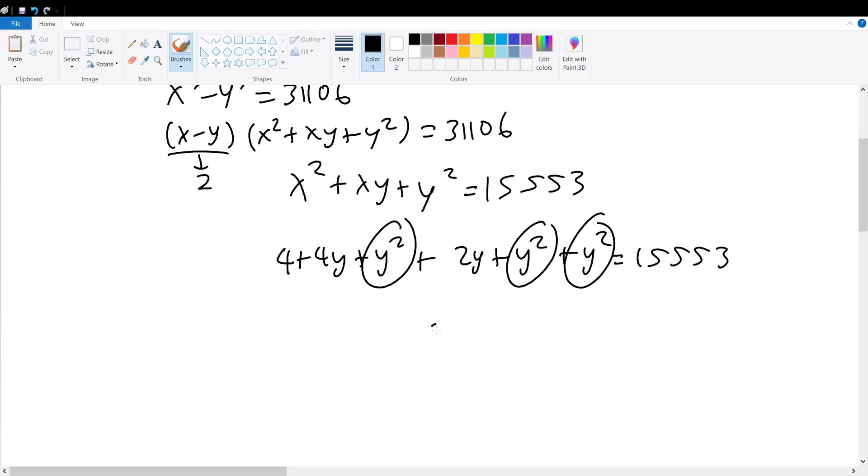Minus 4 on both sides, I get 3y squared plus 6y equals 15549. Now I can factor out a 3, so 3y times y plus 2 should give me 15549. Wait, I have a constant 3.